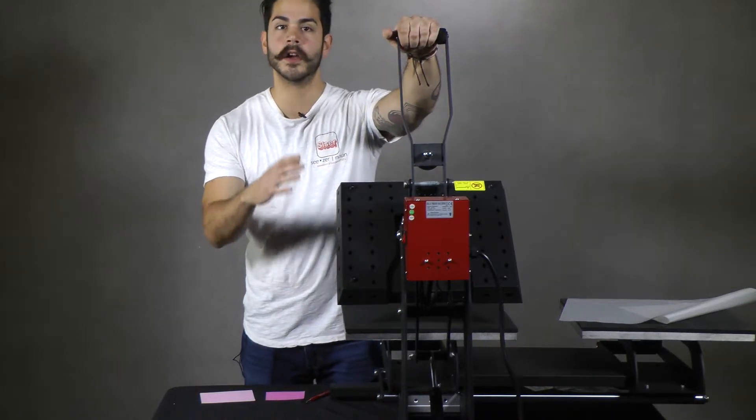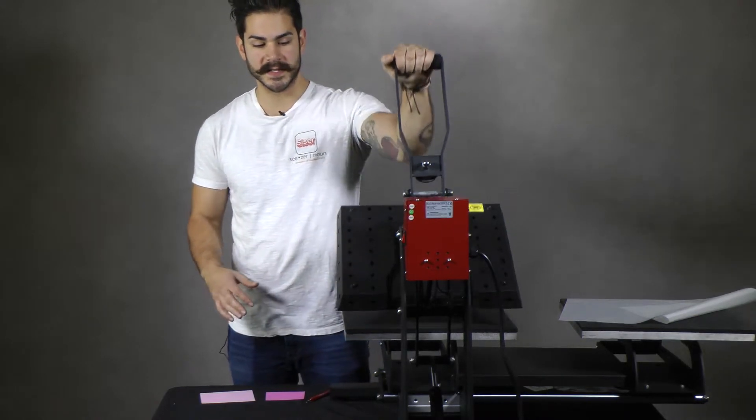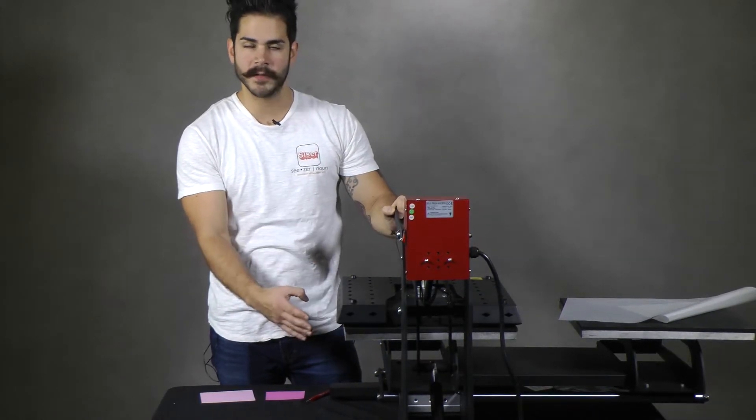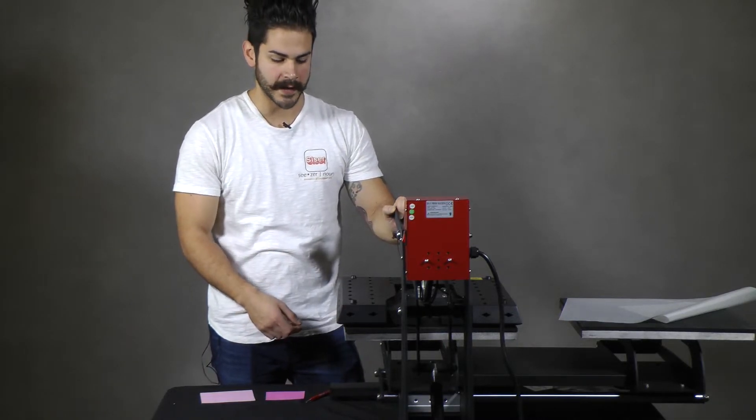If you already have your heat press ready to go at 305 degrees, all you want to do is set your heating element on the lower platen for a few seconds. What this is going to do is warm up the lower platen.